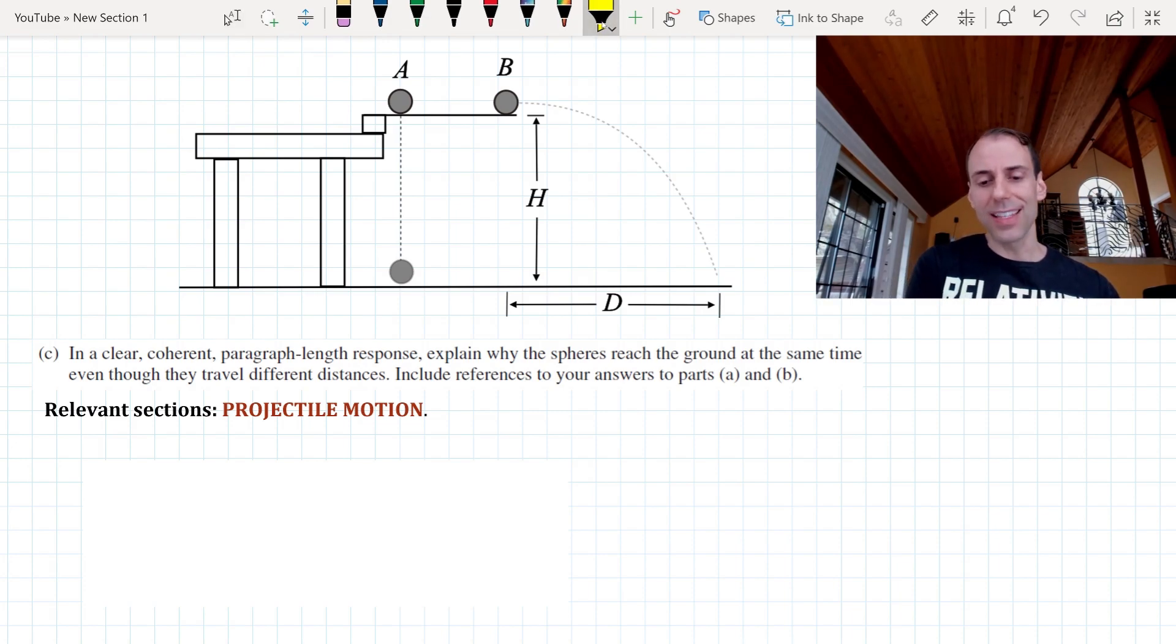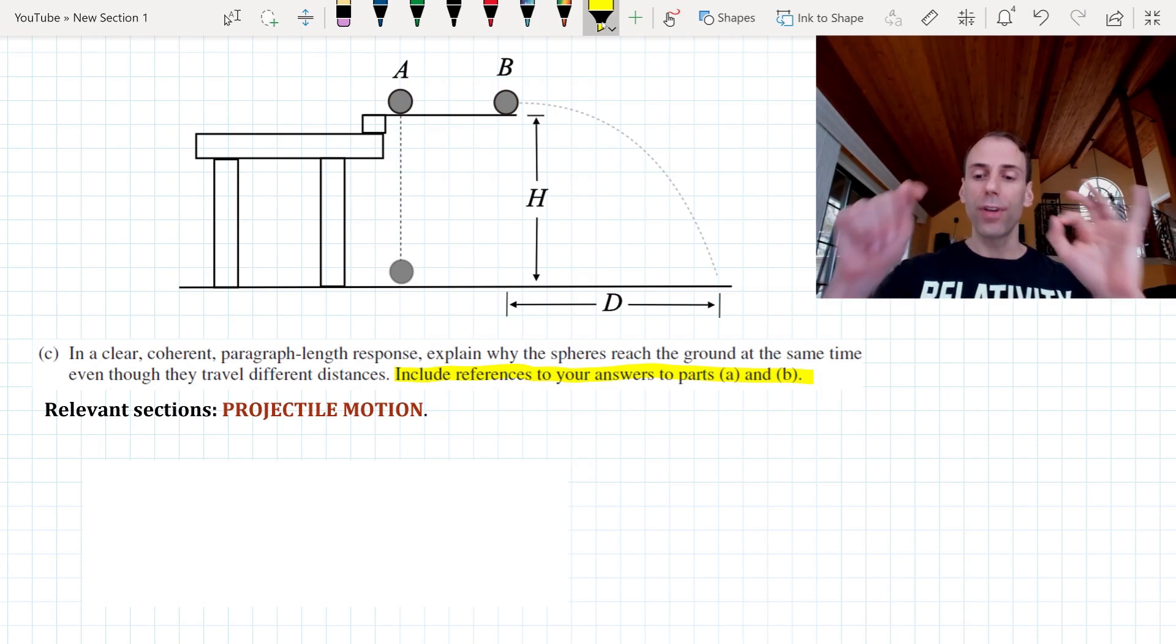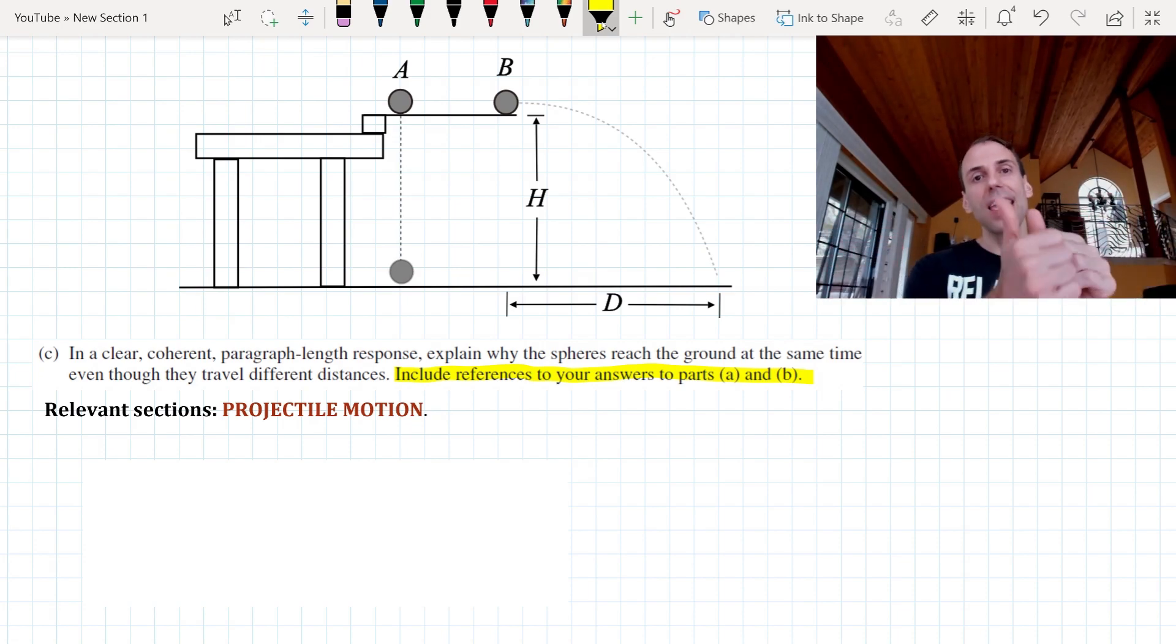Pay attention to the details where it says include references to your answers to parts A and B. So as you write your answer keep that in mind and give the test graders what they want. So look this problem over. You're to write a clear coherent paragraph length response to explain why the spheres hit the ground at the same time even though one travels a different horizontal distance. So pause the video and write down your answer, and as a hint there's five total points to this problem.